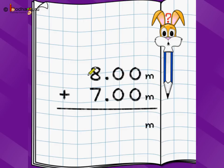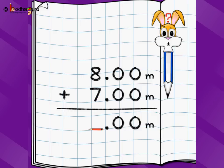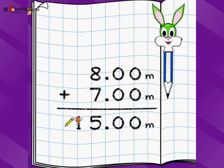Now let's come to the extension of this to decimal point notation. We can write 8 meters as 8.00 meters — the 00 after the decimal point represents the centimeter aspect. So 8.00 meters is the same as 8 meters. We want to add 8.00 meters plus 7.00 meters. We start from the rightmost digit — 0 plus 0 is 0, 0 plus 0 is 0 — then beyond the decimal point, 8 plus 7 is 15. So the answer is 15.00 meters.